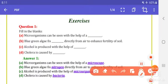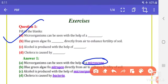Question 1: Microorganisms can be seen with the help of a microscope. Blue green algae fix nitrogen directly from air to enhance fertility of soil. Alcohol is produced with the help of microorganisms. And last, cholera is caused by bacteria.